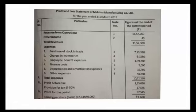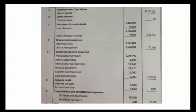First, revenue from operations — Note No. 1. Revenue from operations: sale of goods at net value is 11,57,260. That is, total sales are 11,69,900, less sales return of 12,640, giving a net figure of 11,57,260.